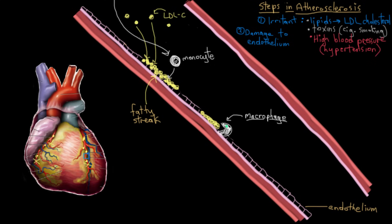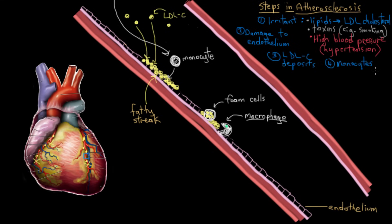Unfortunately, things don't go as planned for our macrophage, because it starts to gorge itself. The macrophage eats so much cholesterol that it just becomes too full of these yellow cholesterol droplets and dies off. Someone a long time ago looked down a microscope and thought these dead macrophages filled with cholesterol looked like sea foam — so these dead macrophages filled with cholesterol are now called foam cells.